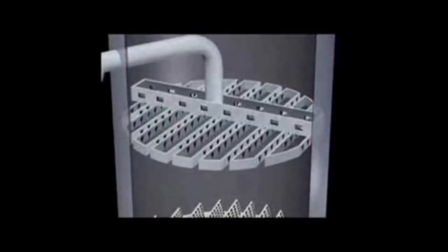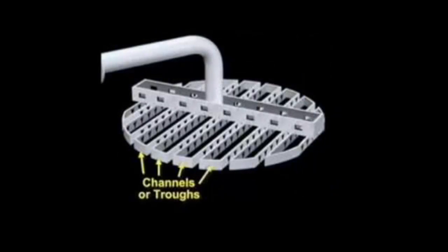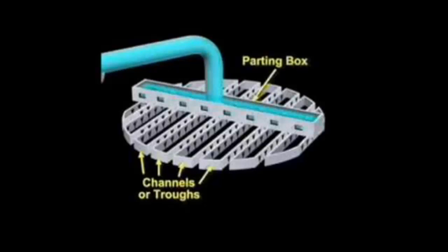The trough distributor consists of a series of channels which provide the pour points to the packed bed. On top and perpendicular to these channels is another channel, which distributes the liquid to each of the channels underneath.